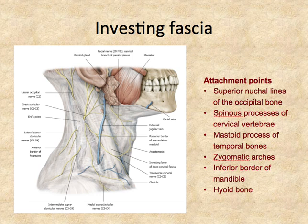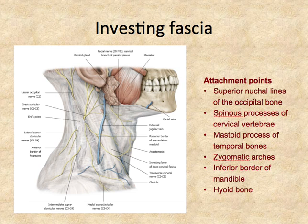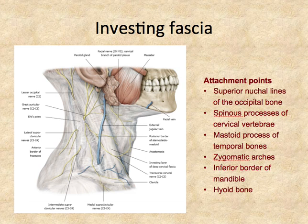As you move up the sternocleidomastoid, you'll be able to palpate this bony landmark and see that the investing fascia attaches there. Most of you have already removed the fascial covering over the zygomatic arches because we already dissected the infratemporal fossa and the inferior border of the mandible as you looked for the facial nerve. This picture gives you a good idea of where the investing fascia was located, although pretty much this area is the only area you're going to still see it in your cadaver when we dissect today.